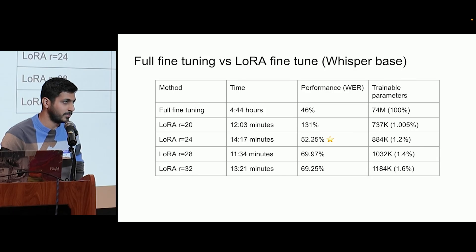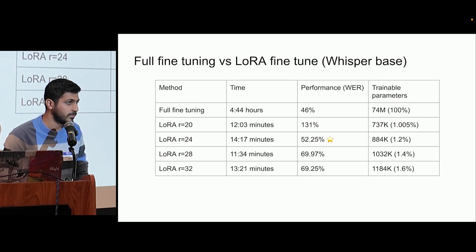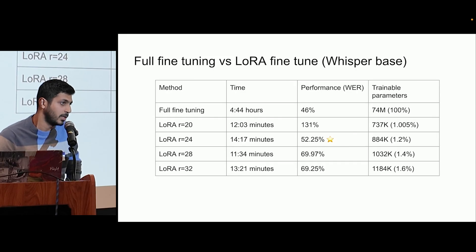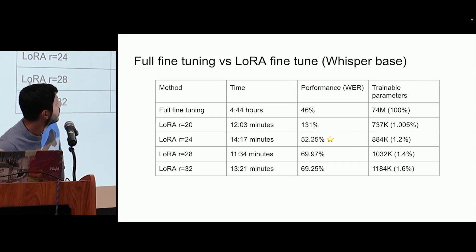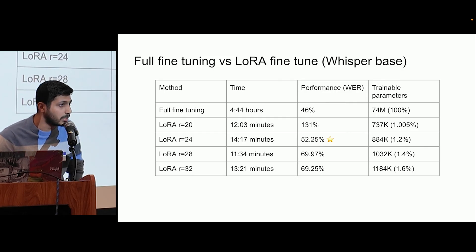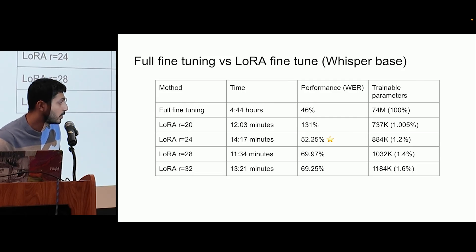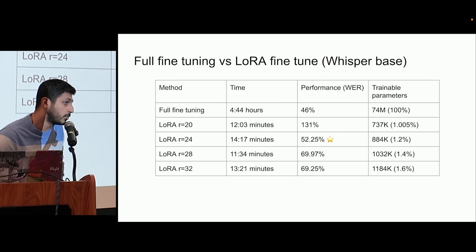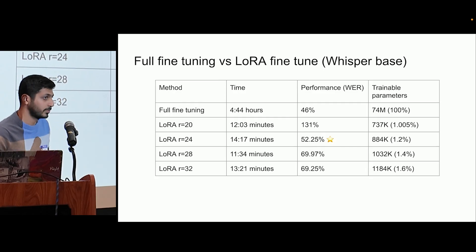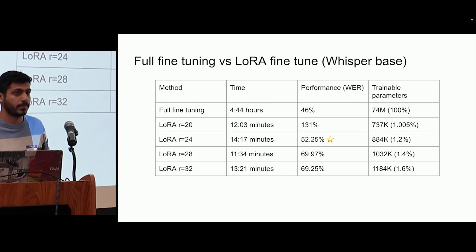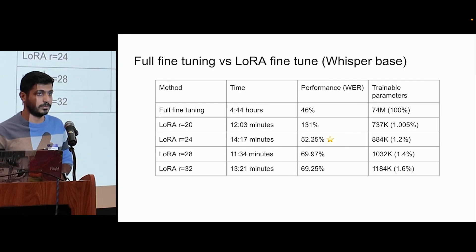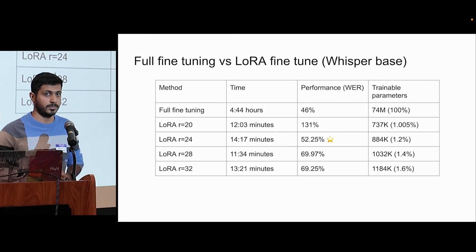A question about why word error rate goes up as you raise the rank — is that expected? It's not expected: normally increasing rank should lower WER. However, there's another parameter called LoRA Alpha, which is the learning rate. The speaker was also changing the learning rate along with the rank, and keeping it consistent would have improved the word error rate more clearly. That's why the trend appears inconsistent.